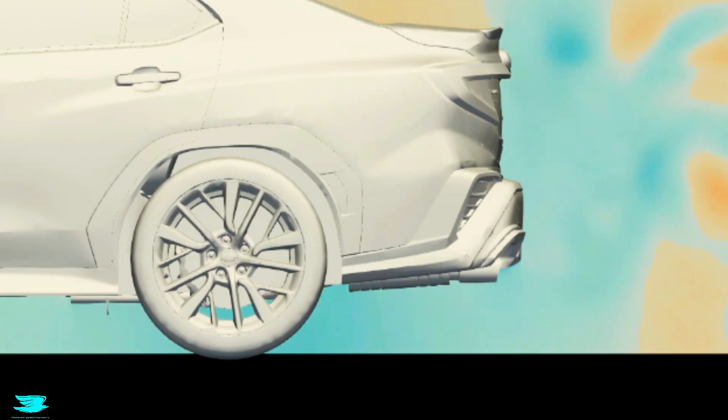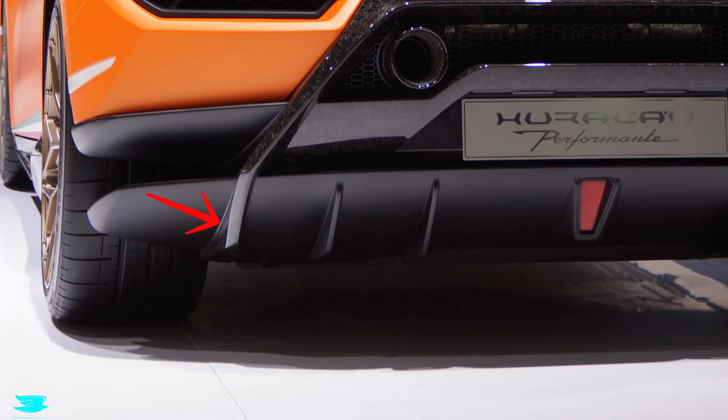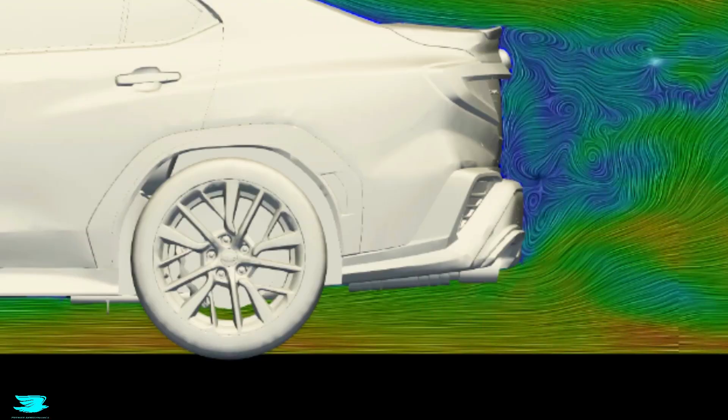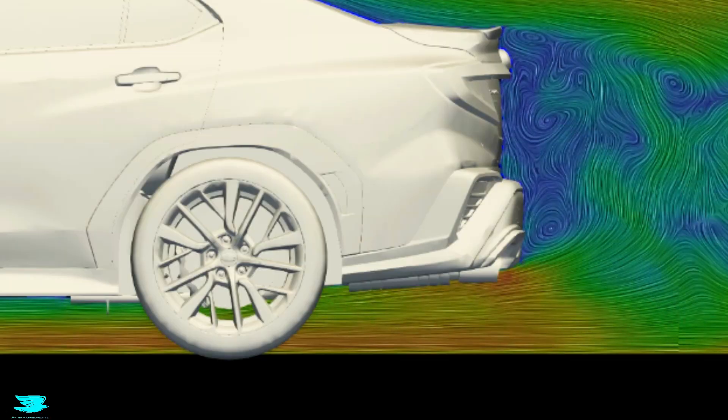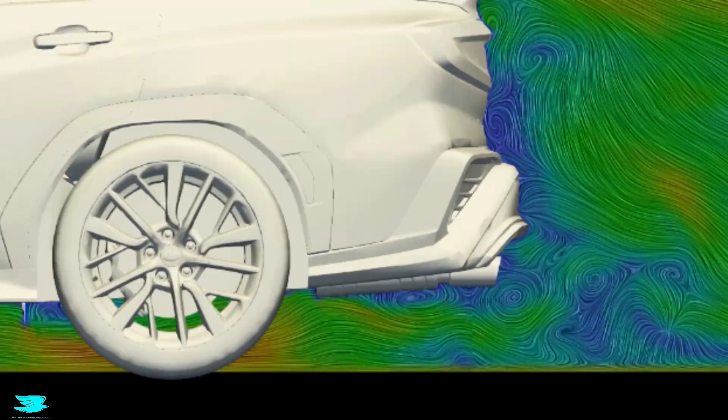To stop that, adding streaks to the diffuser would help. So making the diffuser more aggressive would be better, but it would also need to be designed to keep handling those rear wheel wakes well too.